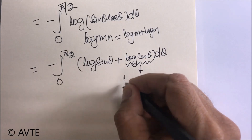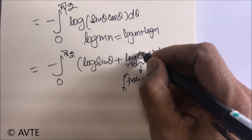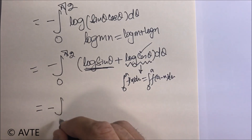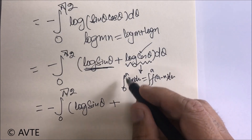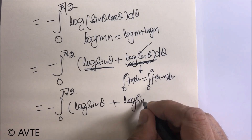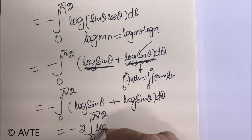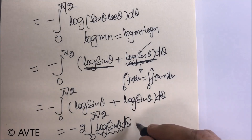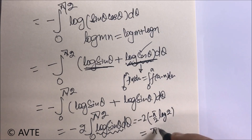Apply the property ∫₀ᵃ f(x)dx = ∫₀ᵃ f(a−x)dx, and ∫₀^(π/2) log(cos θ)dθ will also turn into ∫₀^(π/2) log(sin θ)dθ. So the expression becomes 2 × ∫₀^(π/2) log(sin θ)dθ. You can now use the known result: this integral equals −π/2 · log 2. Therefore the answer to the second question is π log 2.